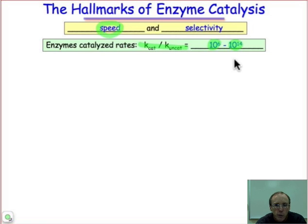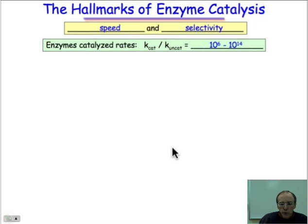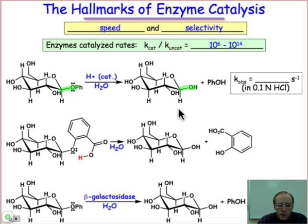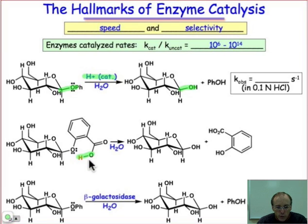But first, let me give you an example of a reaction that's carried out under different conditions, one of which is an enzyme-catalyzed process. The reaction is a substitution reaction on a glucose derivative. It involves replacing a phenoxide group with a hydroxide group. It can be carried out under specific acid-catalyzed conditions, under general acid-catalyzed conditions where the proton is delivered from an intramolecular source, or it can be conducted by the enzyme β-galactosidase.